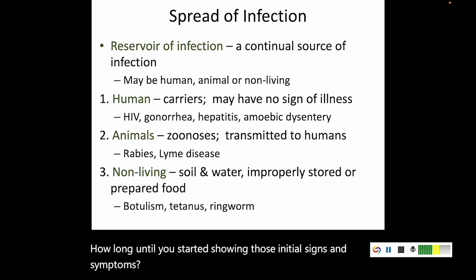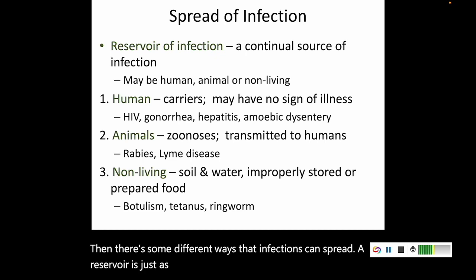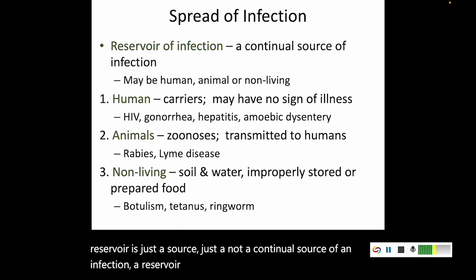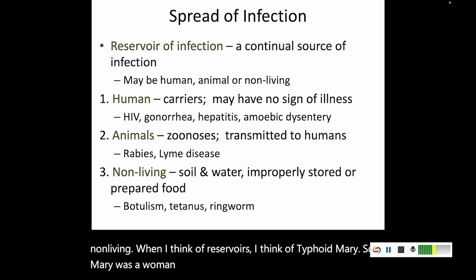There are different ways that infections can spread. A reservoir is just a continual source of an infection — it could be a human, an animal, or a non-living source. When I think of reservoirs, I think of Typhoid Mary. Mary was a woman living in the Bronx area who worked as a cook.